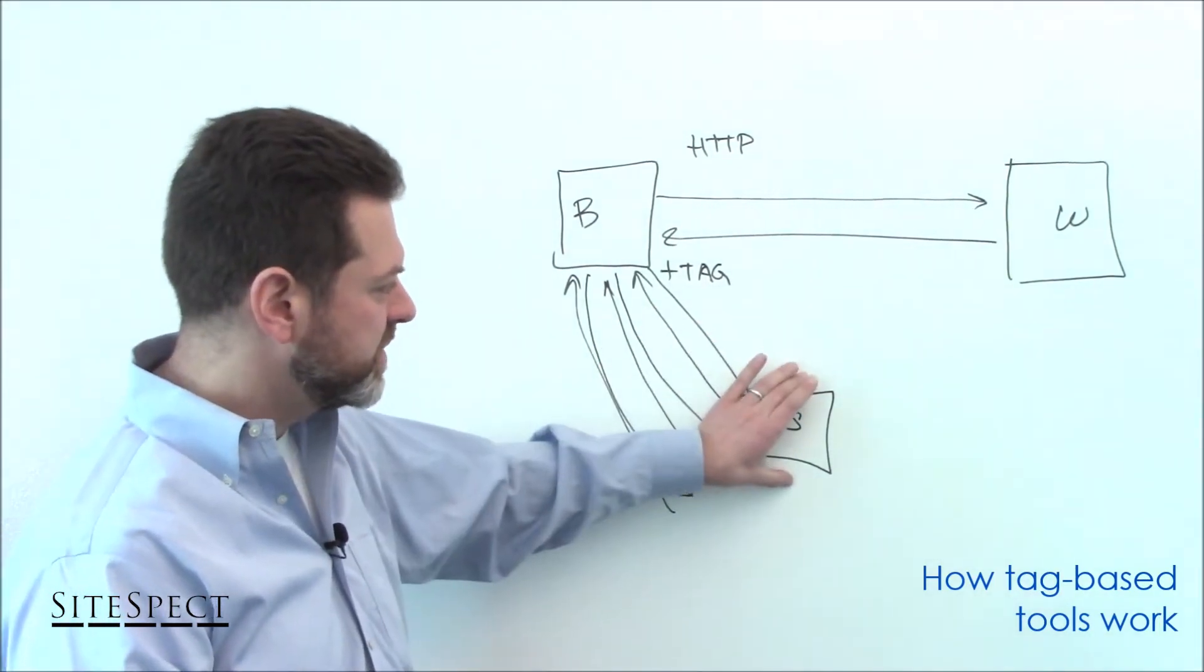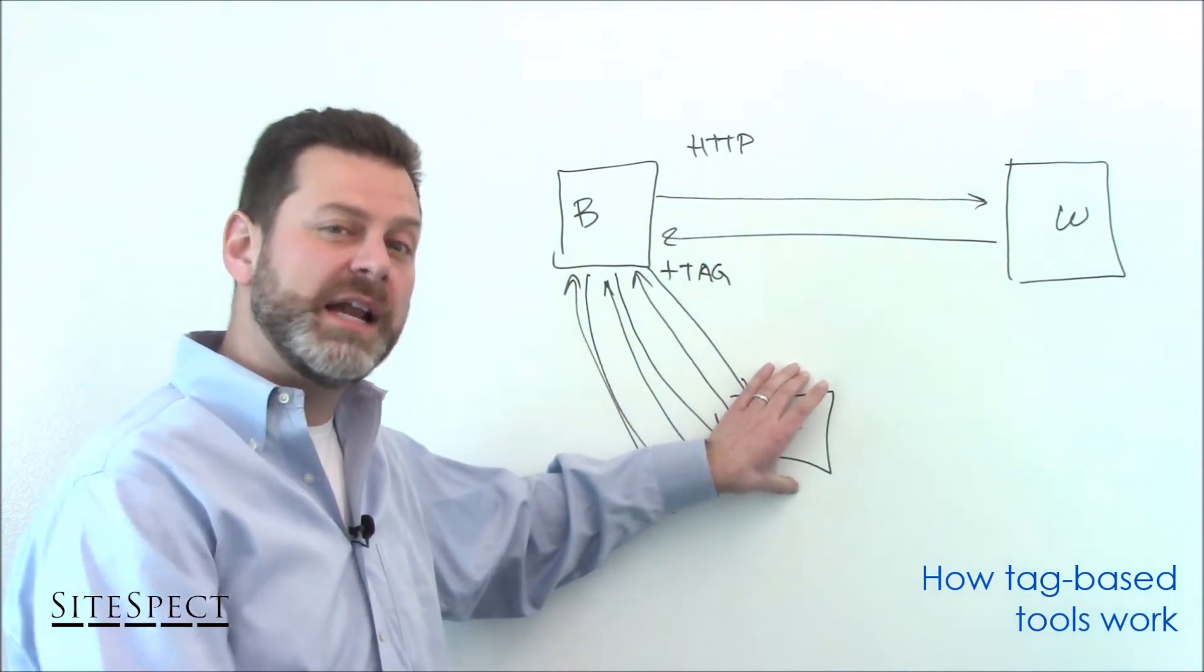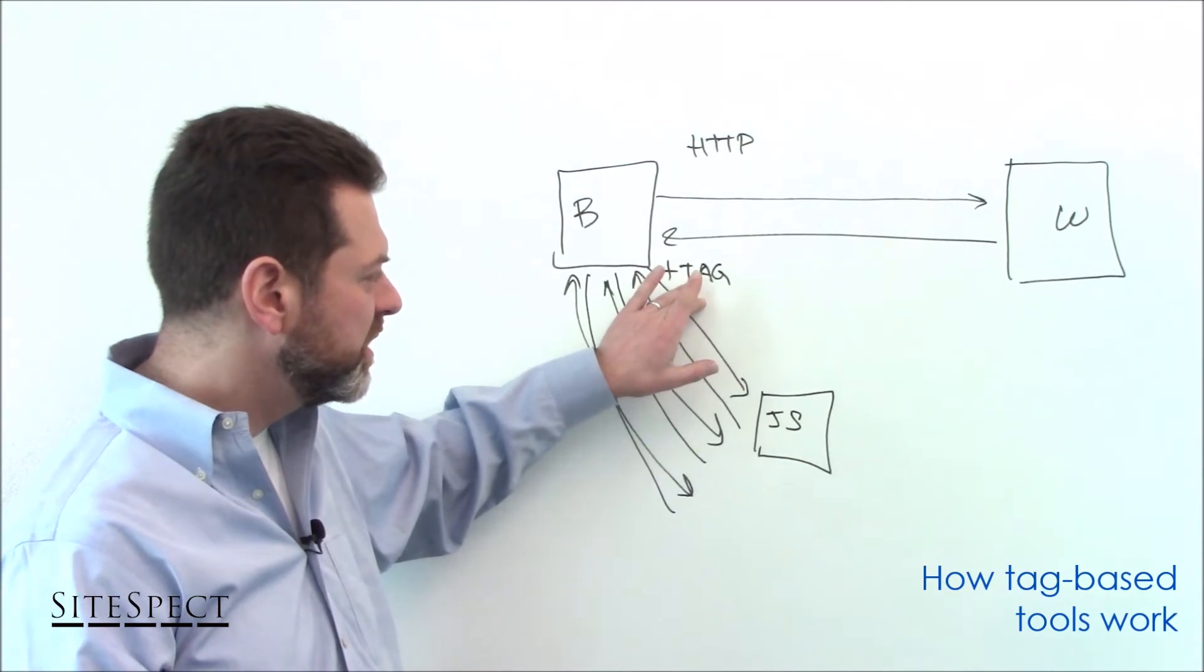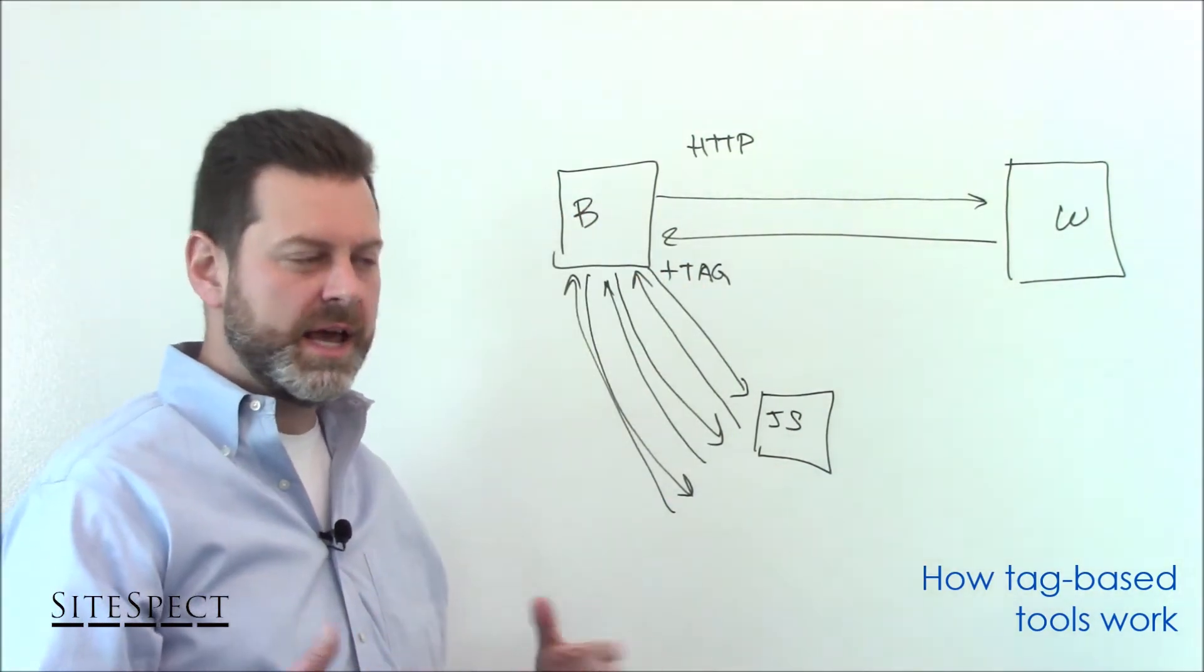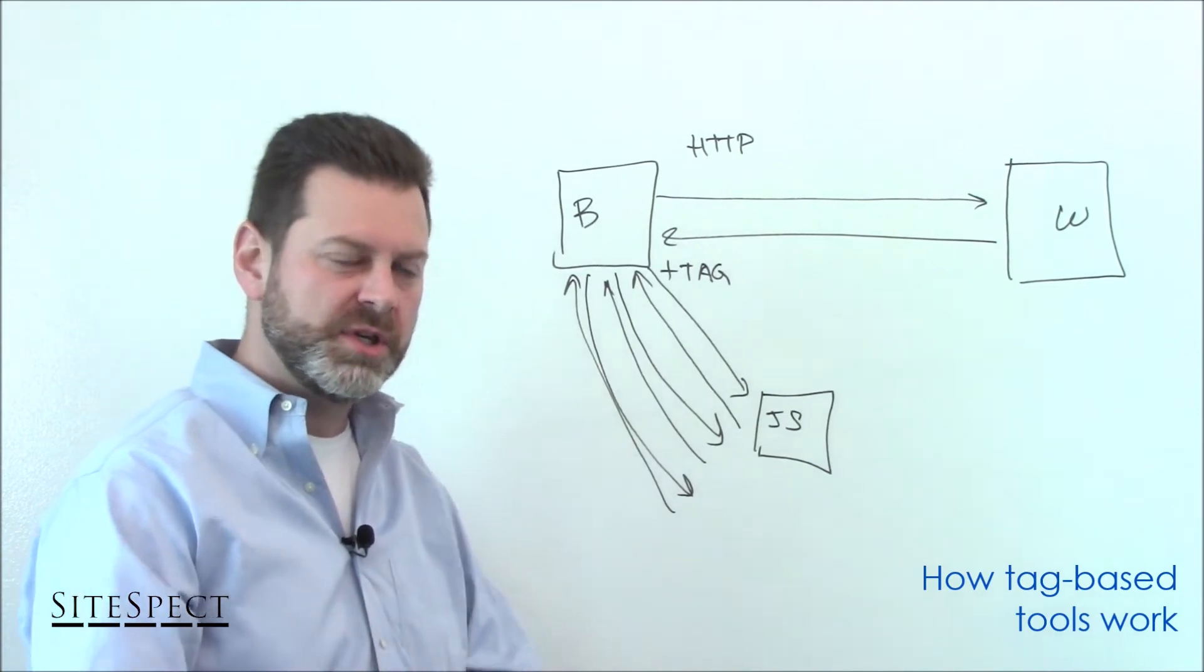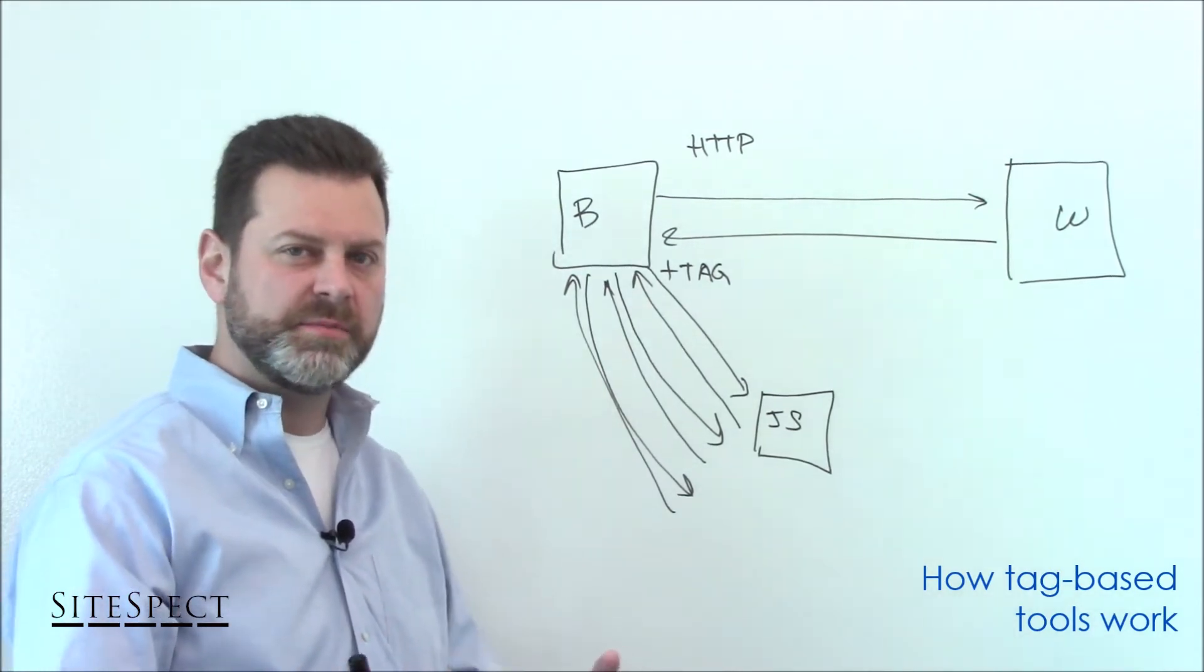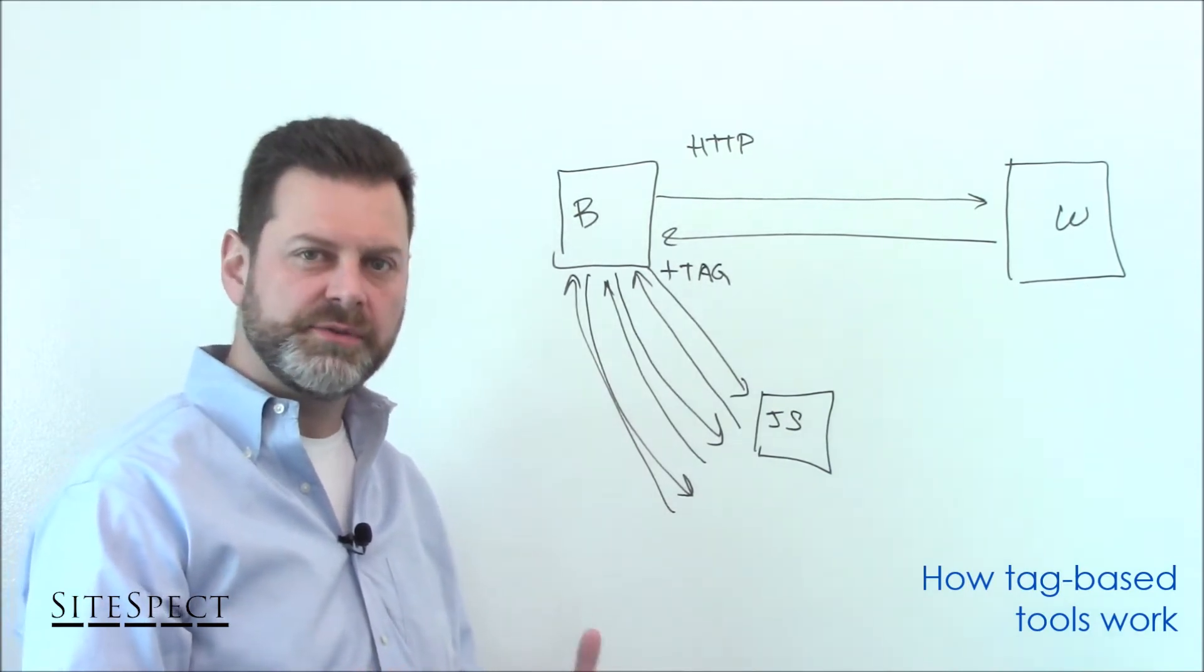So an example might be a banner image or a hero image on a homepage may actually load. And then the tag triggers and it says, oh, well, there's an experiment running and we need to swap out that image for a different one. So as the tag executes, it will actually make that swap. And the end user has loaded the initial page and seen the initial image. And now that image will be swapped out for the test image. So it is an artifact that can cause some confusion or irregular experience, essentially for the end user.